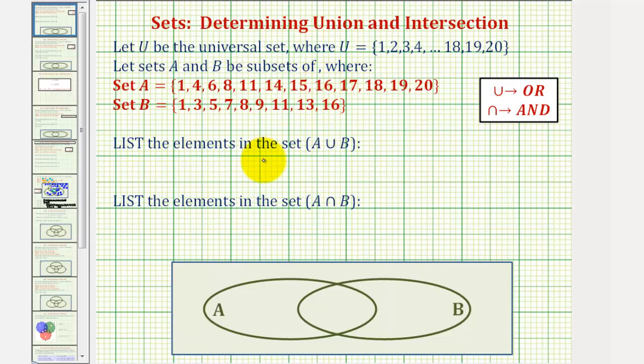We want to list the elements in the set A union B, and also list the elements in the set A intersect B.